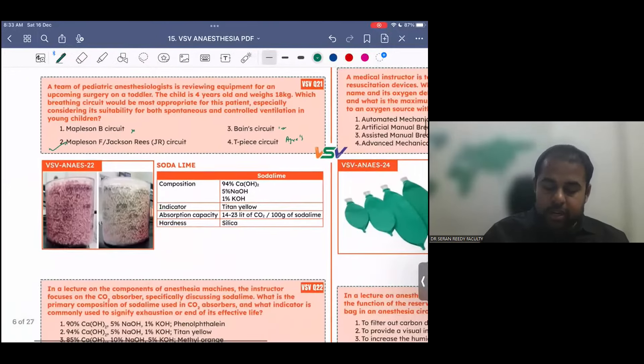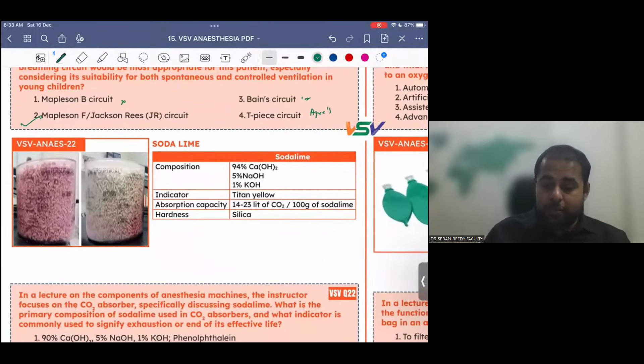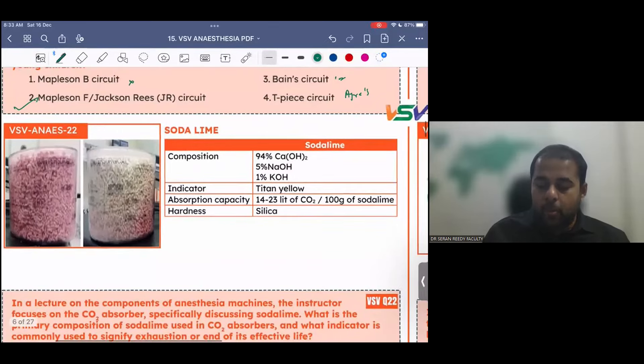Then coming to another important thing. This is carbon dioxide absorber. This is soda lime. Soda lime, there are a few things. Soda lime, barium lime, and AMSOB. But remember, soda lime is the most common thing which we use. The composition is 94% calcium hydroxide, 5% sodium hydroxide, and 1% potassium hydroxide. The color indicator, once it is exhausted, the color indicator is Titan yellow. Remember this, Titan yellow. And absorption capacity, it absorbs 40 to 23 liters of carbon dioxide per 100 grams of soda lime. And hardness, this is hard with the presence of silica in that.